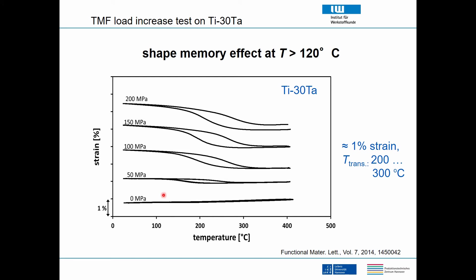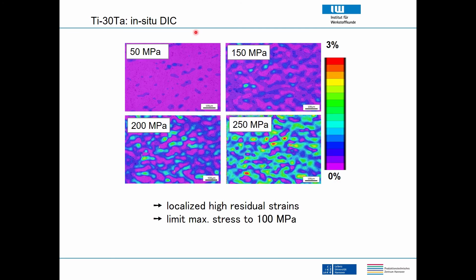We started with Ti-30Ta and ran thermomechanical fatigue tests, cycling temperatures between room temperature and around 420 degrees C. When we applied a stress of 50 MPa a small hysteresis opened up, and as we increased the stress the hysteresis became larger. We finally got something like one percent strain at temperatures around 200 degrees C. However, the problem becomes apparent — the hysteresis lobes do not close fully anymore.